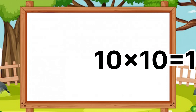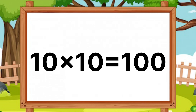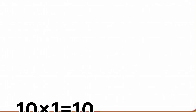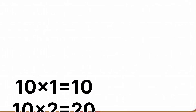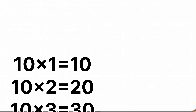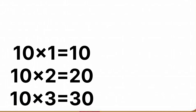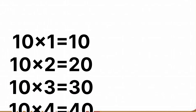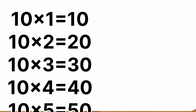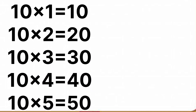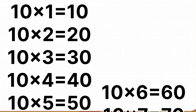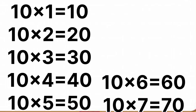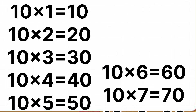Ten tens are one hundred. One more time. Ten ones are ten. Ten twos are twenty. Ten threes are thirty. Ten fours are forty. Ten fives are fifty. Ten sixes are sixty. Ten sevens are seventy.